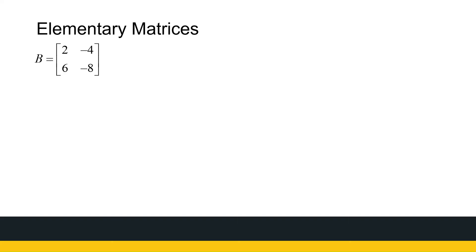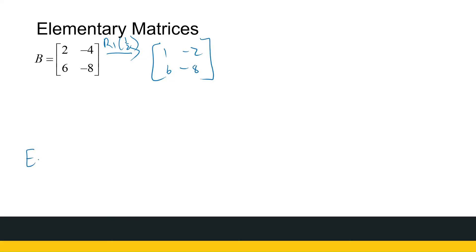I've got a matrix B here. We're going to perform Gaussian elimination on it to get to the identity matrix. If I take row one and multiply it by a half, I get [1, −2, 6, −8]. The elementary matrix E1 is obtained by performing the same operation on the identity matrix: multiply row one by a half, giving E1 = [1/2, 0; 0, 1].